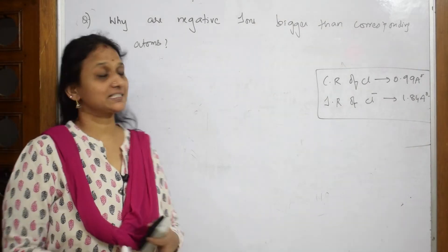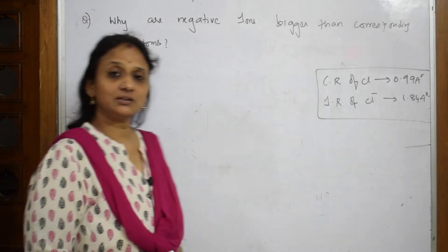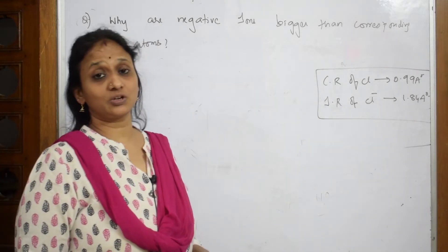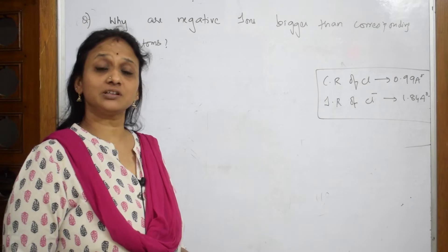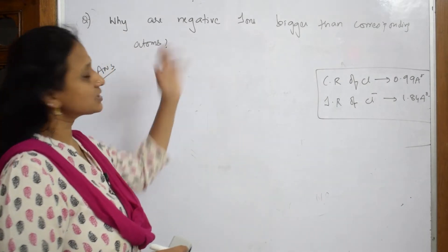Now one more question based on size. In the earlier question, what did we learn? Why is a metal ion—a cation—smaller than its corresponding atom? Suppose if this question is given...